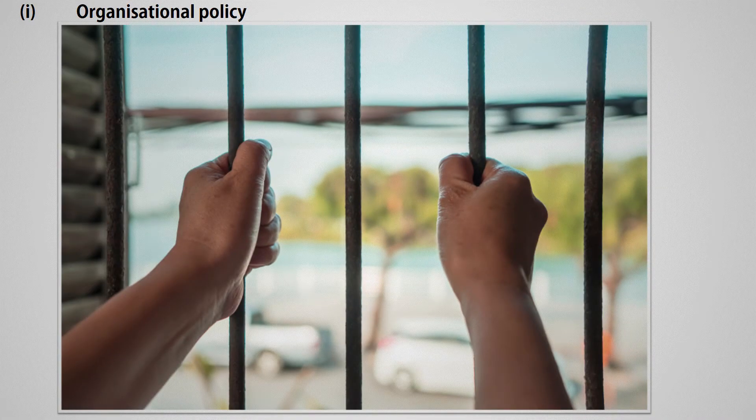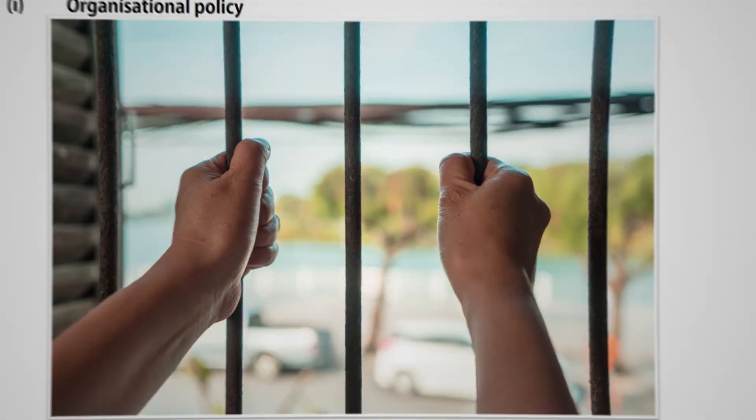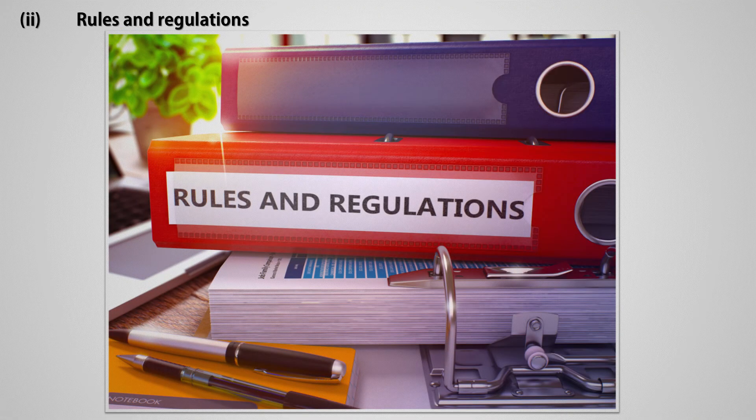The first organizational barrier is organizational policy. If organizational policy directly or indirectly obstructs effective communication, it becomes a barrier. For example, in an organization with a highly centralized pattern, people may not be encouraged to have free communication, thus creating barriers.